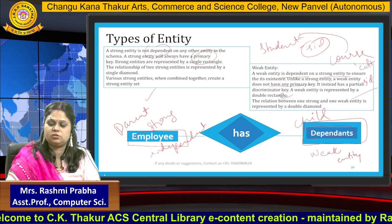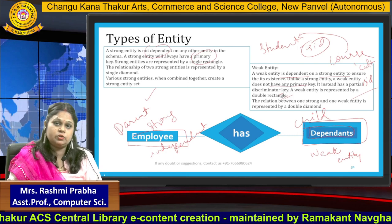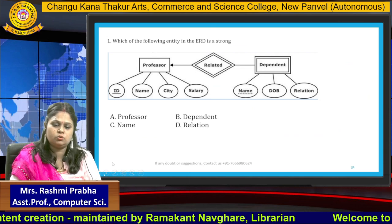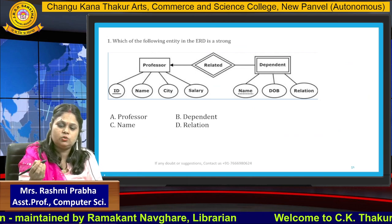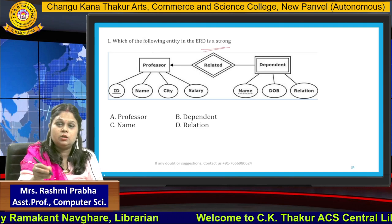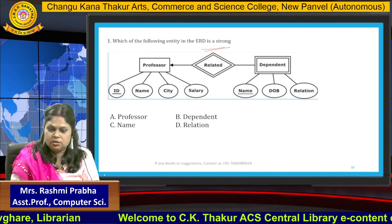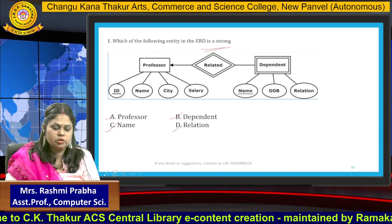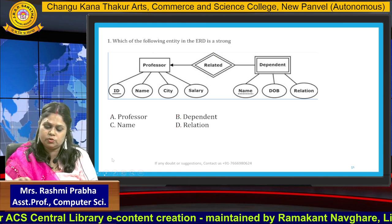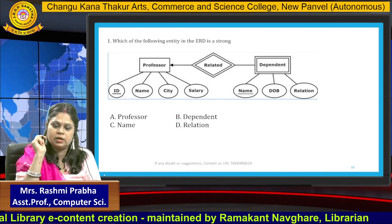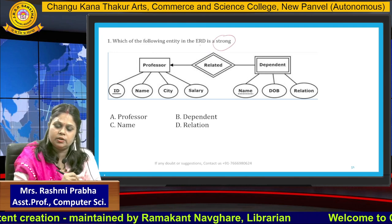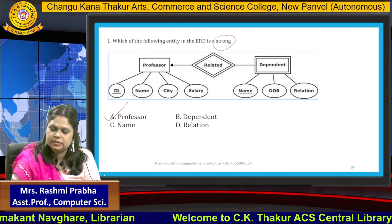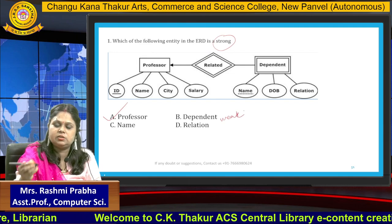These are the key points about strong and weak entities to remember for your semester examination. Now let me explain a practice question. Given an ERD diagram, the question asks: which of the following is the strong entity? The options are professor, name, dependent, and relation. The correct answer is professor — because it is represented by a single rectangle. Dependent is the weak entity because it has a double rectangle.